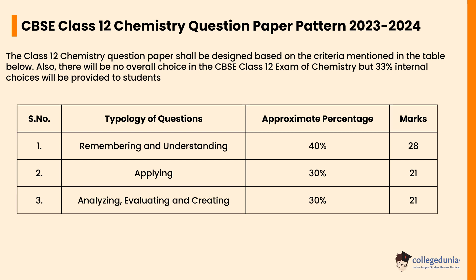Let's check the CBSC Class 12 Chemistry question paper pattern 2023 to 2024. The question paper shall be designed based on specific criteria. There will be no overall choice in the exam, but 33% internal choices will be provided to students. The question paper will contain approximately 40% remembering and understanding-based questions for a total of 28 marks. Questions based on application will constitute 30% of the paper, carrying 21 marks. The remaining 30% will be analyzing, evaluating, and creating type questions, carrying a total of 21 marks.